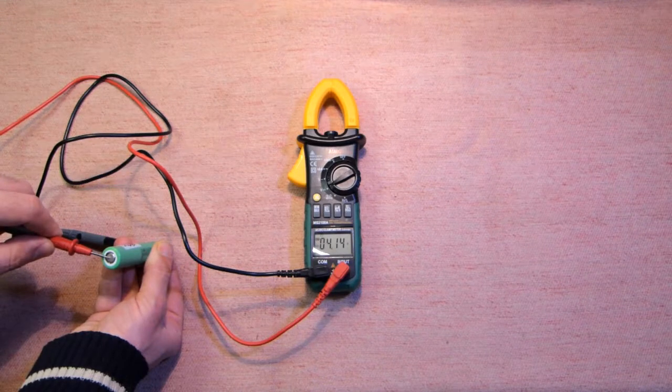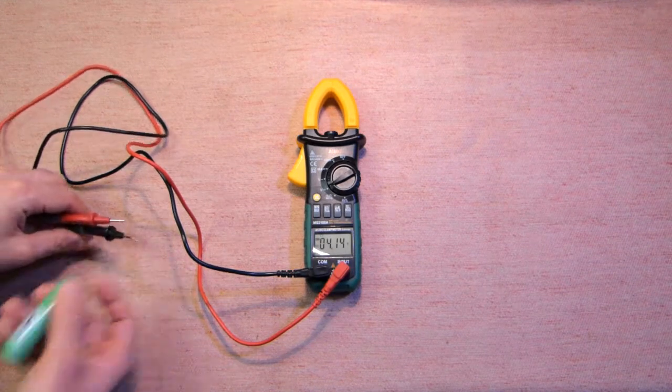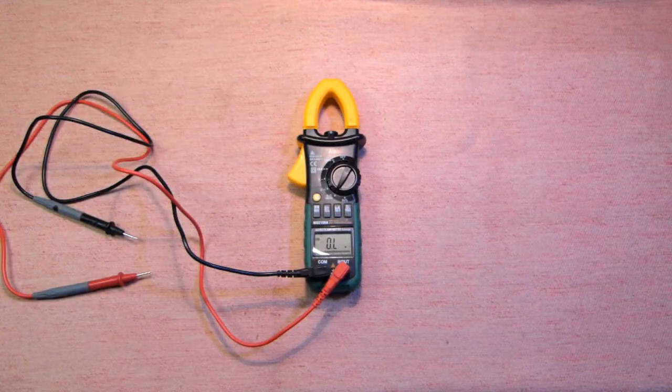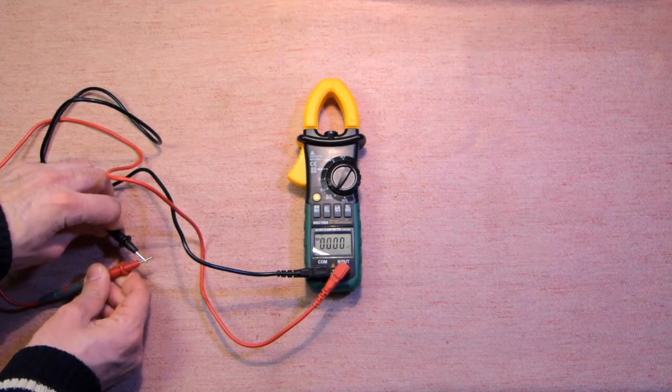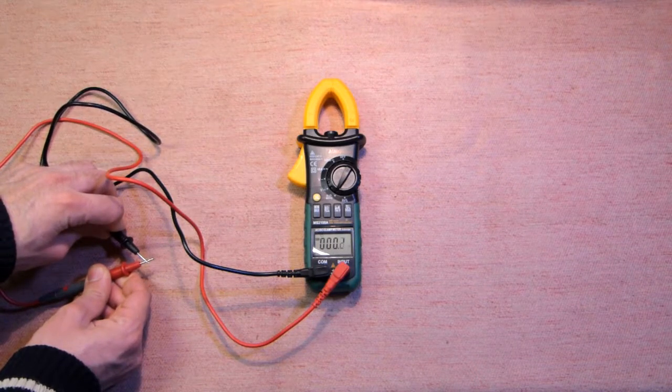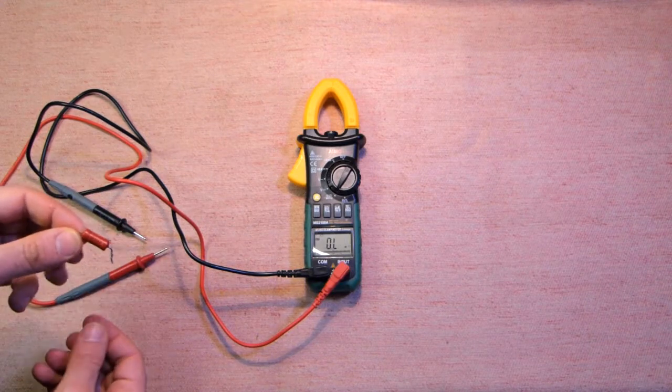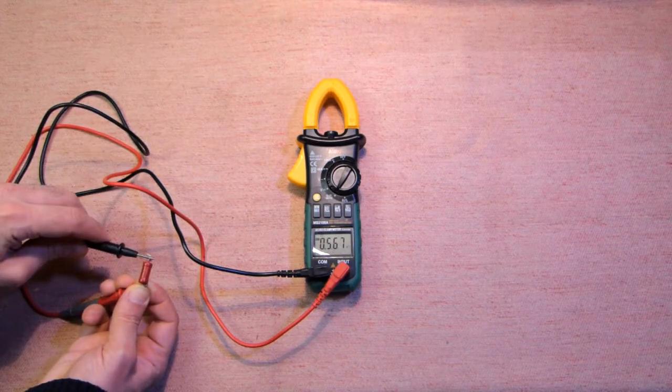DC 4.14, it's okay. Megaohm, it's okay, this resistor is 560 ohms, it's okay.